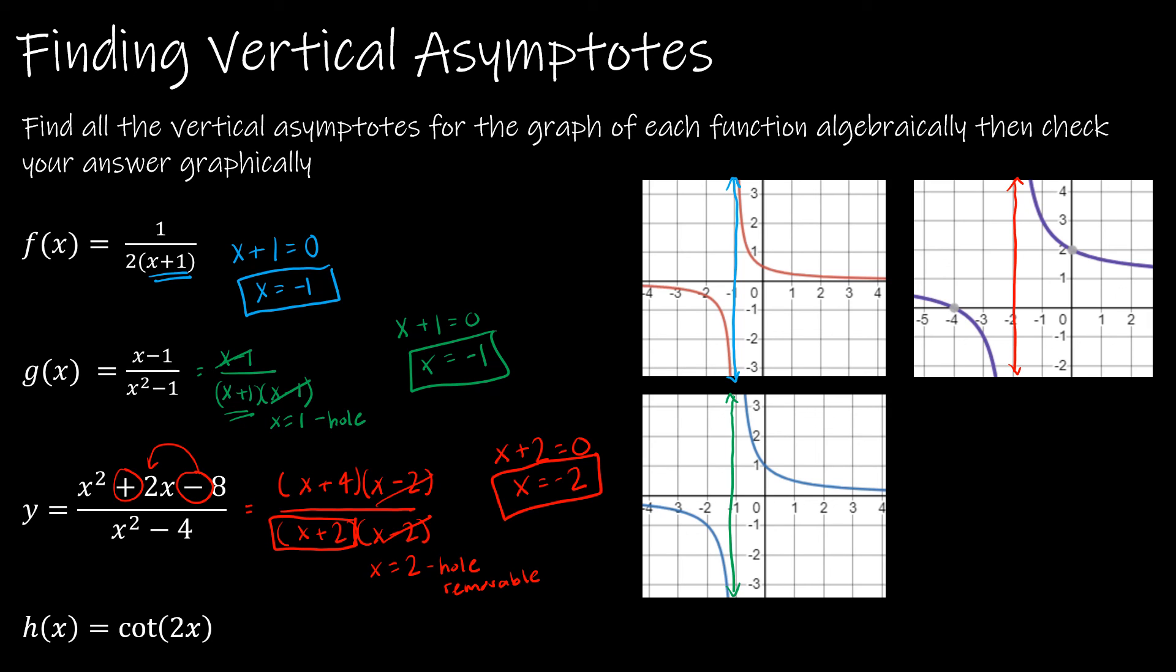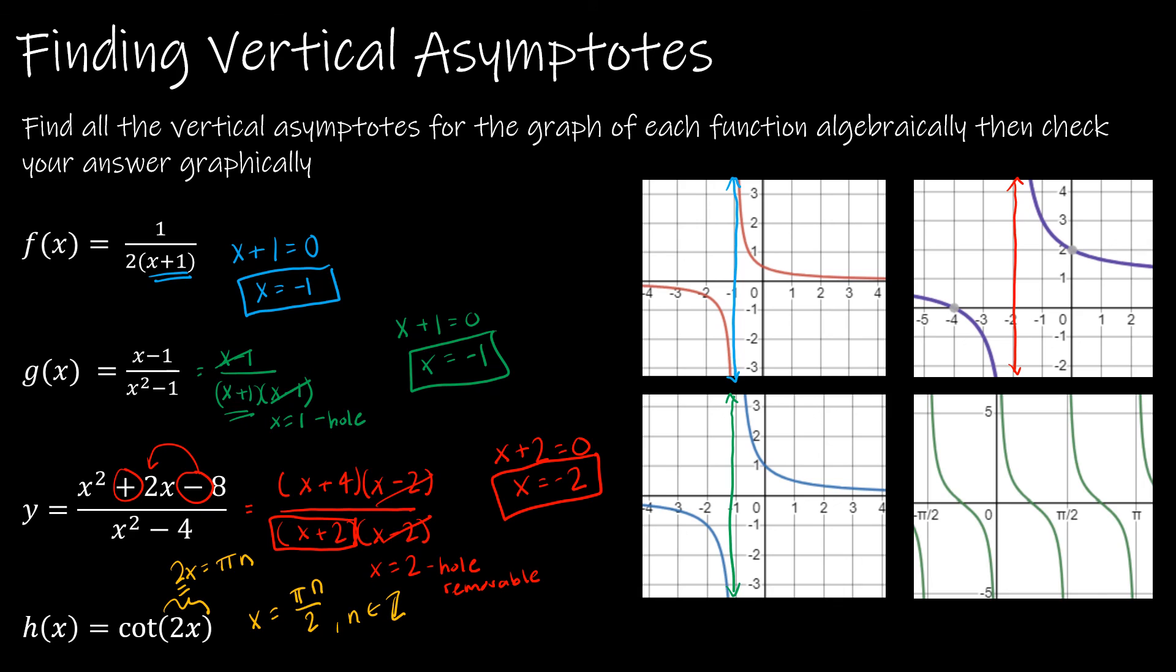Now the last one is cotangent of 2x. So remember when we talked about cotangent, we said that when this value was equal to πn, except that's not going to work because now we're saying 2x has to equal πn. And so essentially, instead of at multiples of π, x is going to be at π/2 times n or πn/2, where n is some integer. So instead of happening at π and 2π and 3π and 4π, because we had to divide by 2, it's at basically intervals of half π. So π/2, π, 0, negative π/2, and so on.